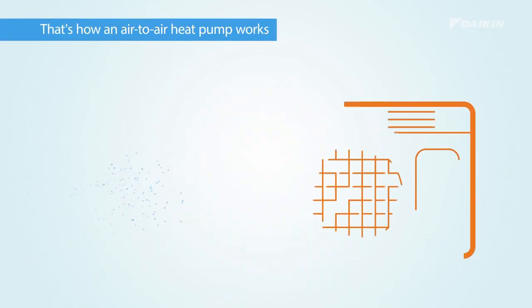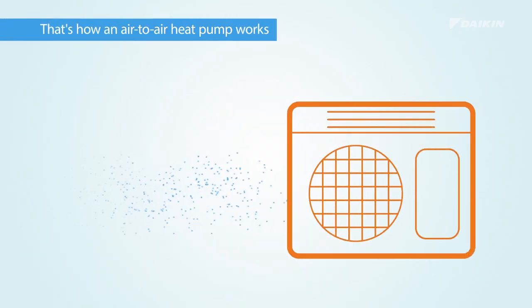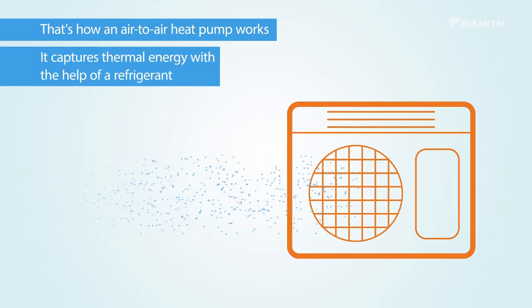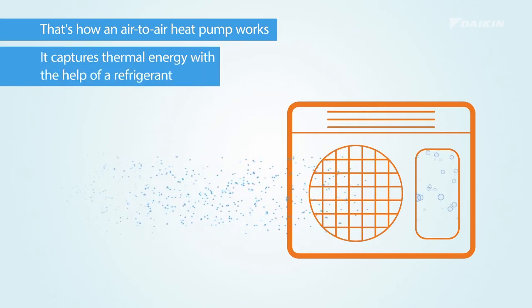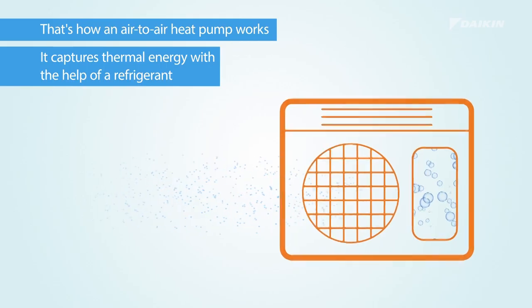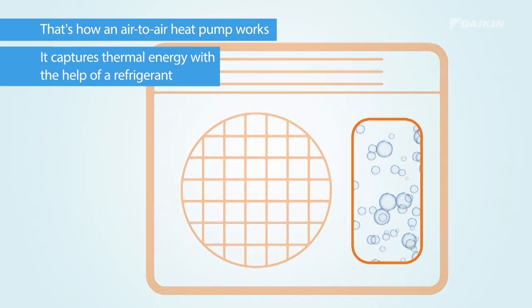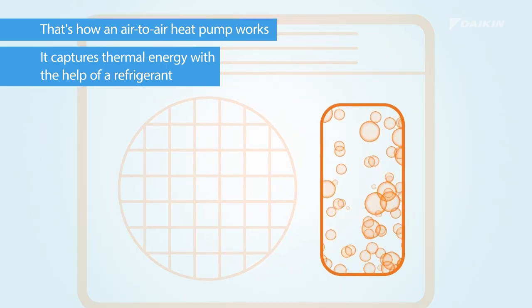And that's exactly how an air-to-air heat pump works. It captures thermal energy from the outside air with the help of a refrigerant. The movement of its particles is then speeded up in the confined space of a compressor.